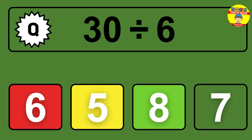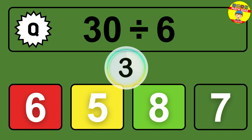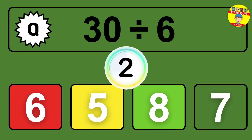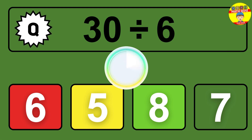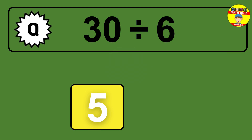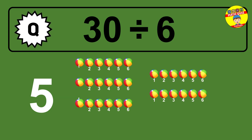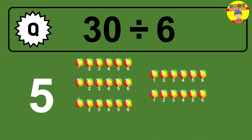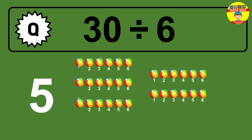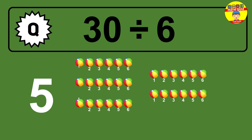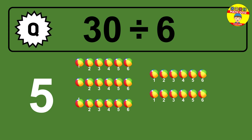30 divided by 6 — time to think. Let's go to the solution. Divide the number 30 by 6. Each group contains 6 units, so dividing 30 by 6 results in 5 equal groups. Thus, the result is 30 divided by 6 equals 5.